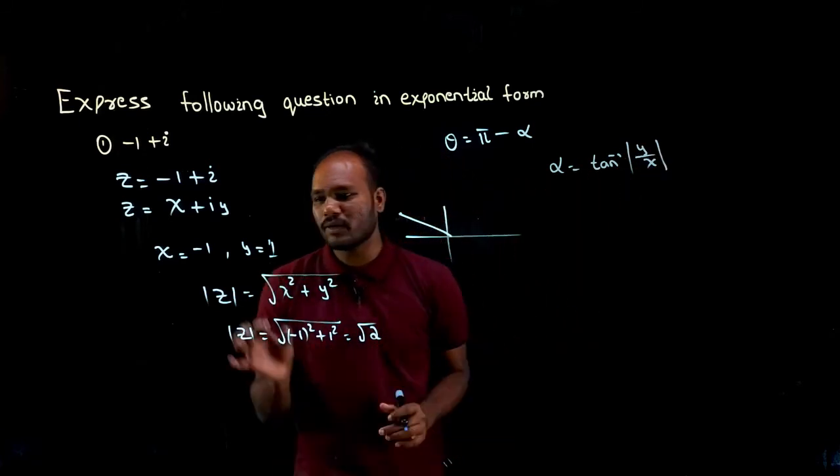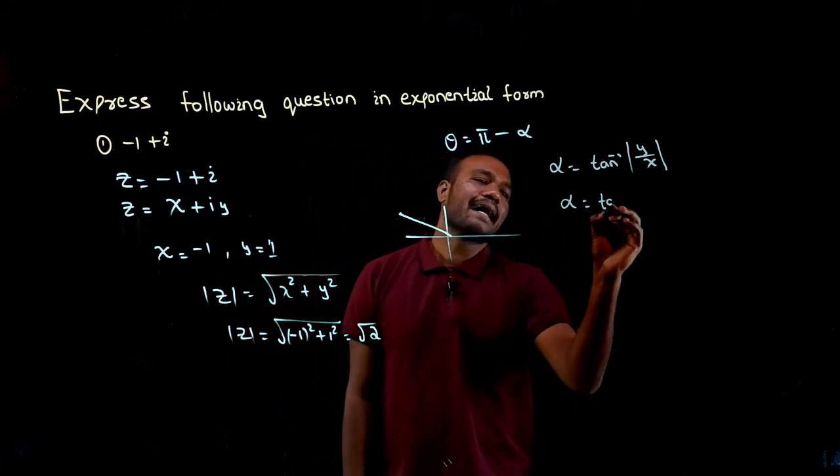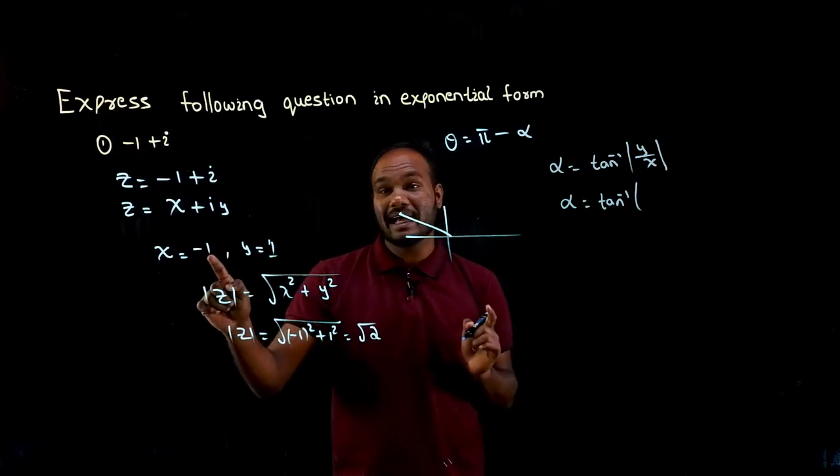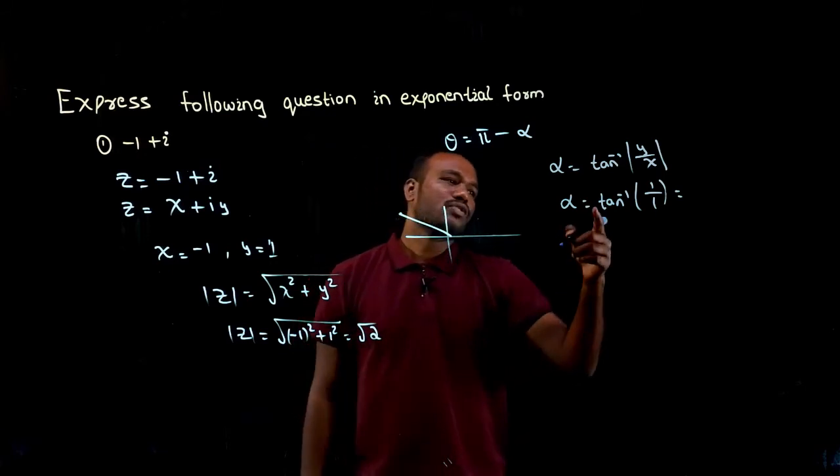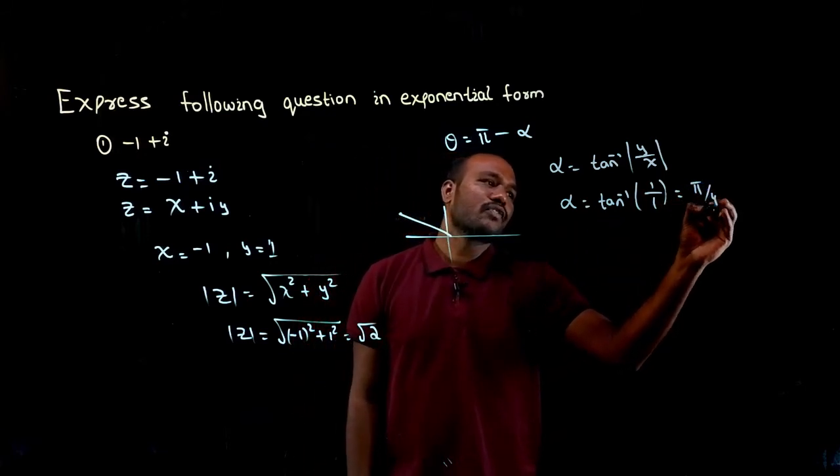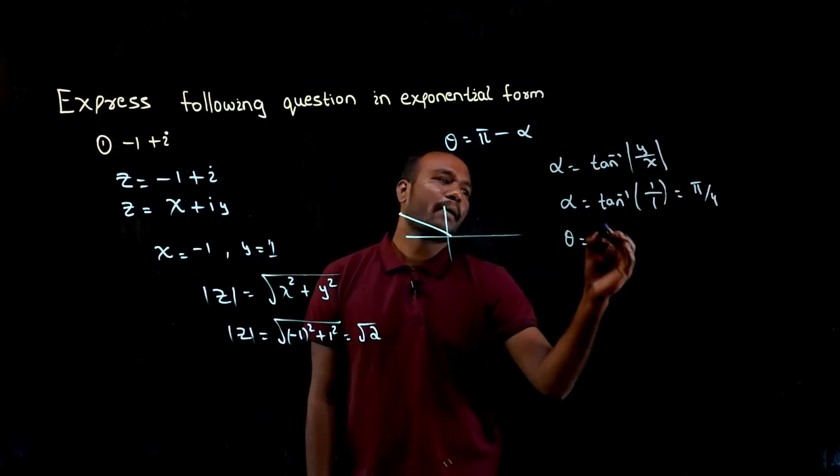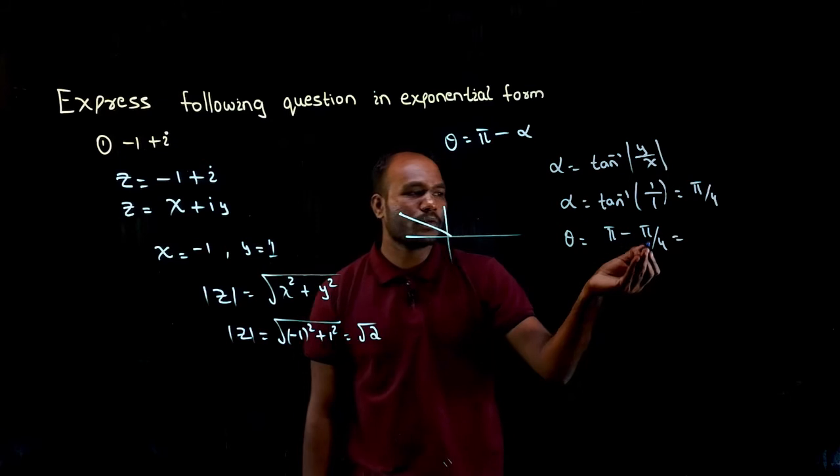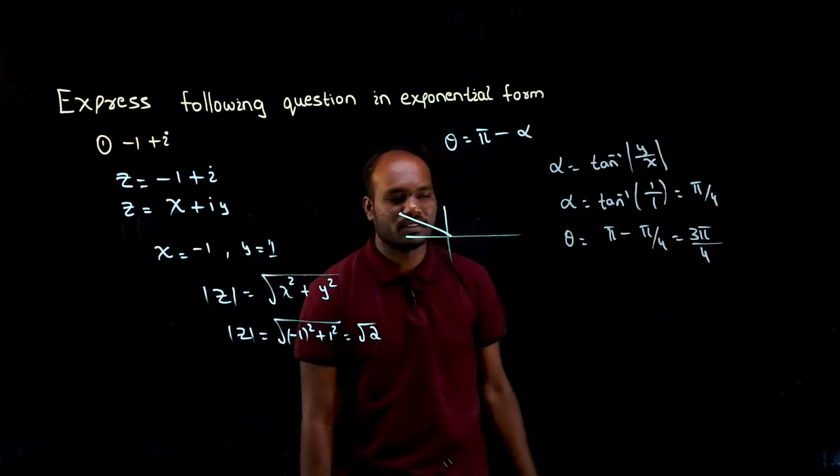Mod is nothing. Just we have to take positive values. If there is -1, we have to take 1. So alpha is nothing but tan⁻¹ of, we have to take just only positive number, that is value 1 by 1. If there is -3, we have to take only 3. So tan⁻¹ of 1 is how much? π/4. This you will get in calculator. So theta is what? π - π/4. You can solve directly or you put it in calculator. You will get it as 3π/4. This is the theta value.